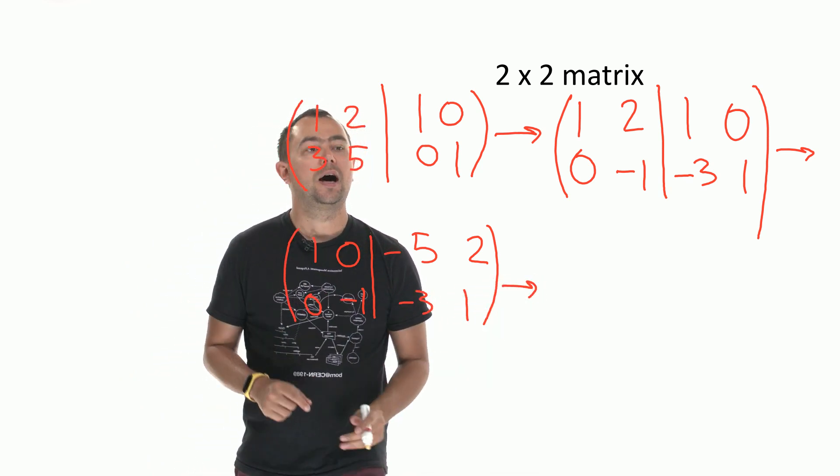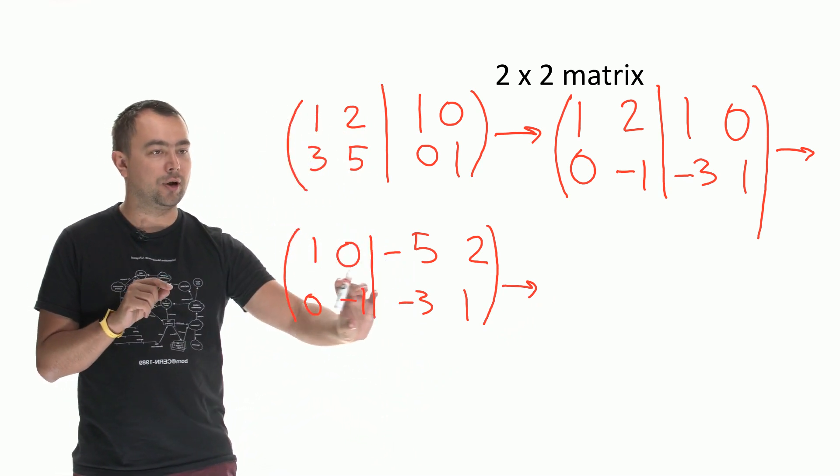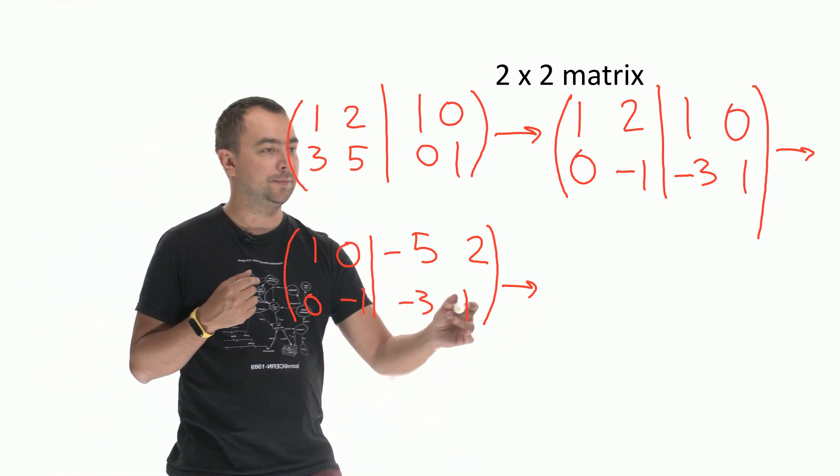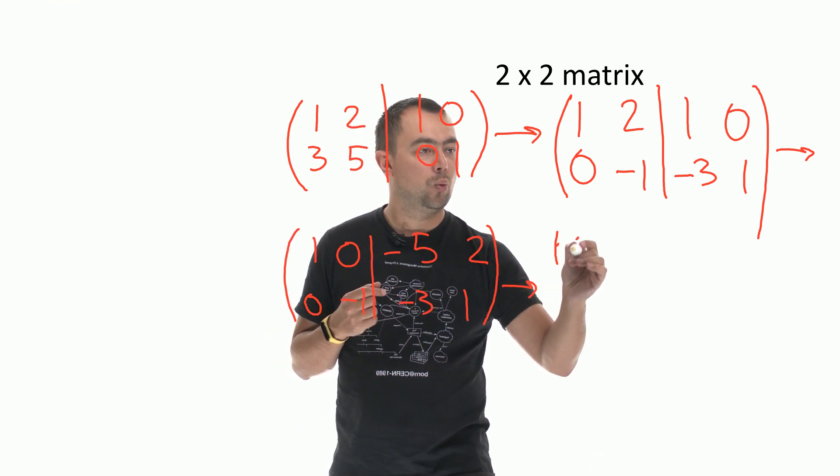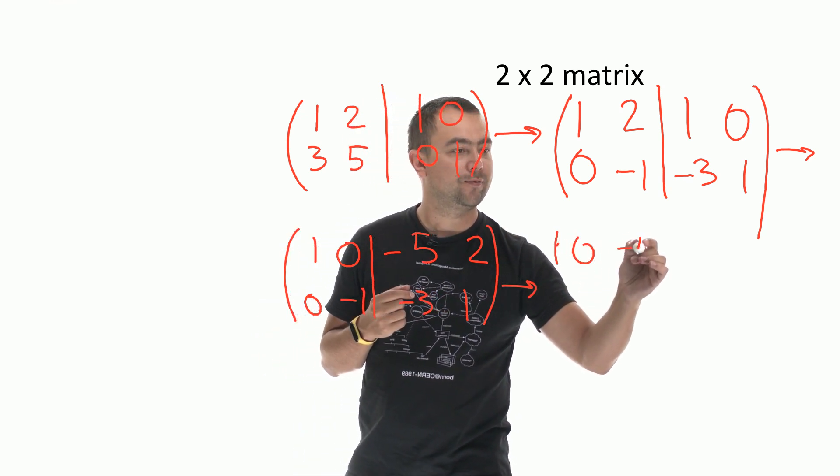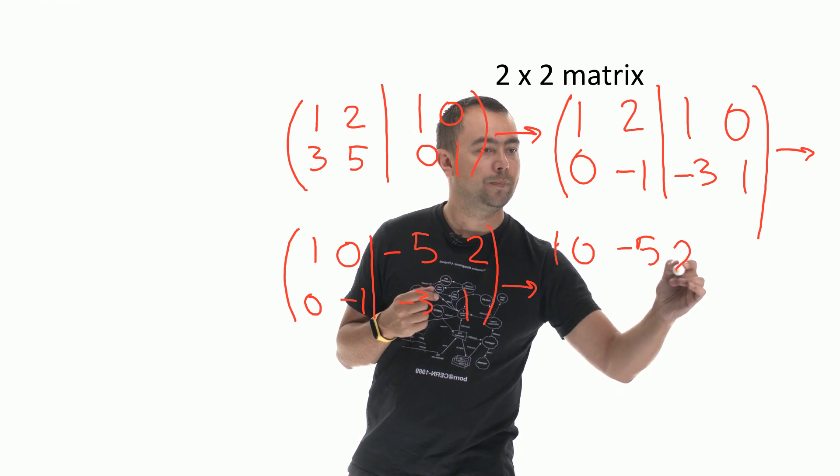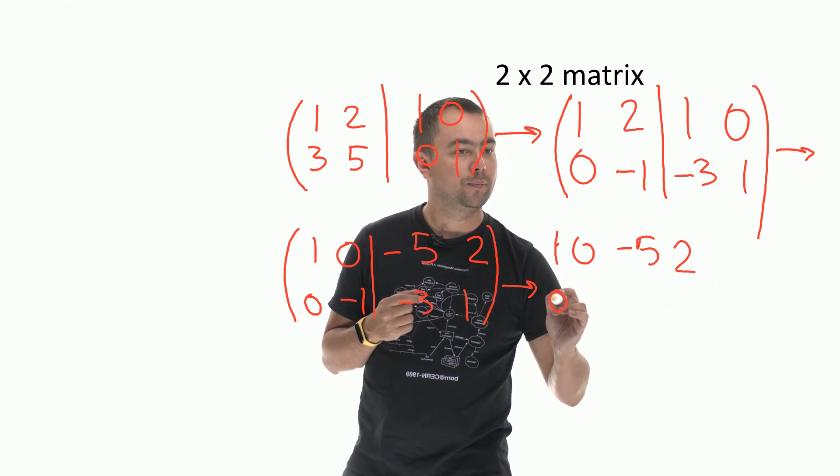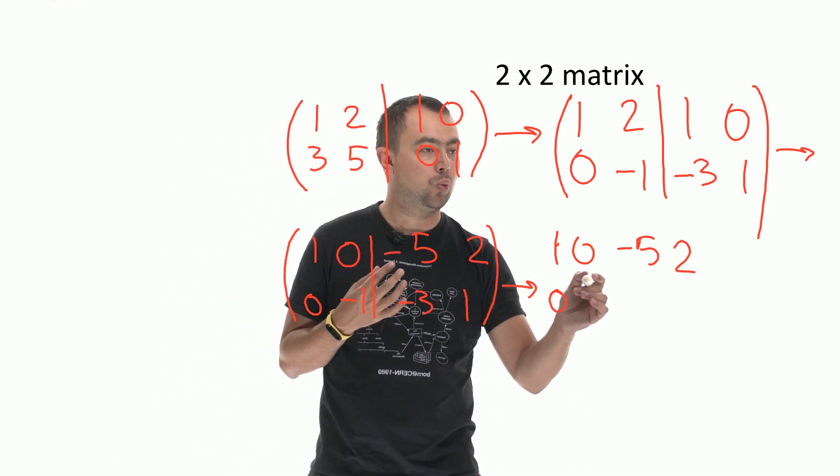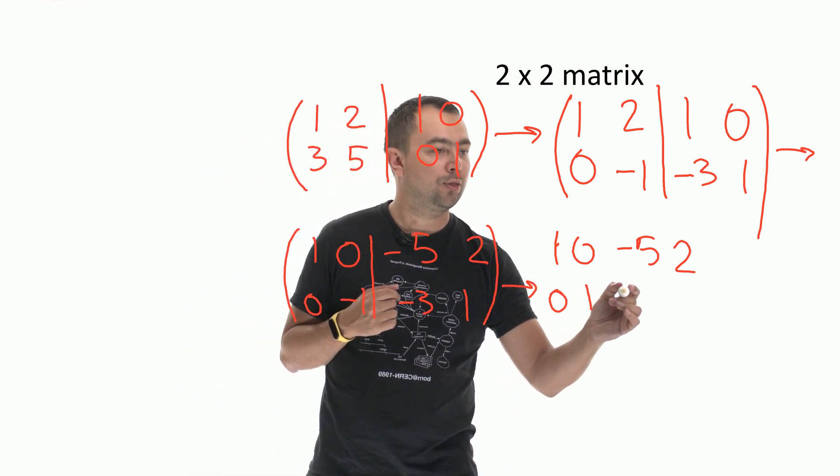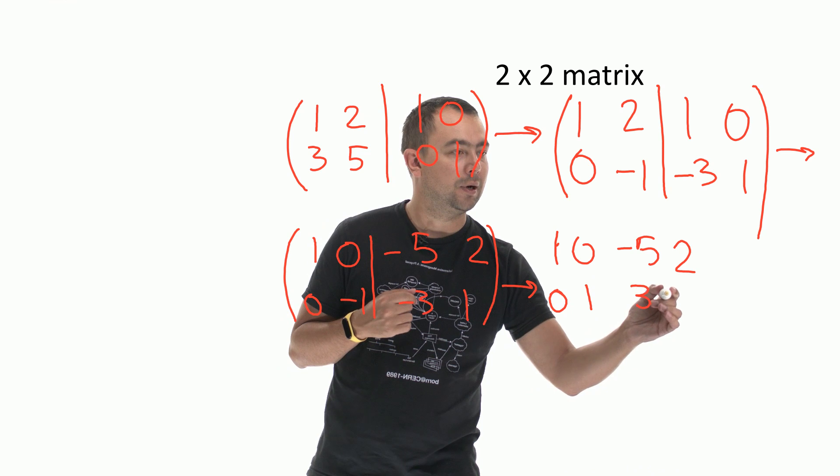And the final step: I multiply the second row by negative 1 and I get the top row: 1, 0, minus 5, 2. Now I've multiplied the second row by minus 1 so it's 0, 1, 3, minus 1.